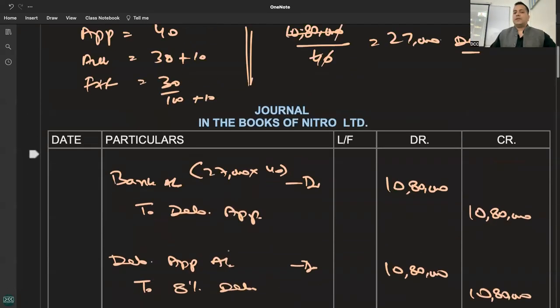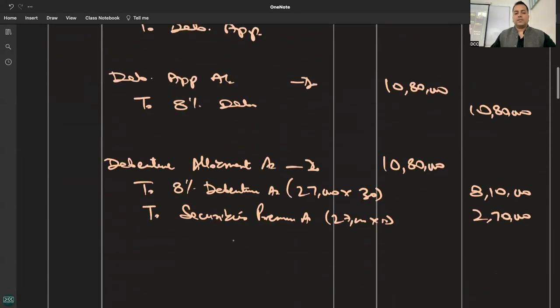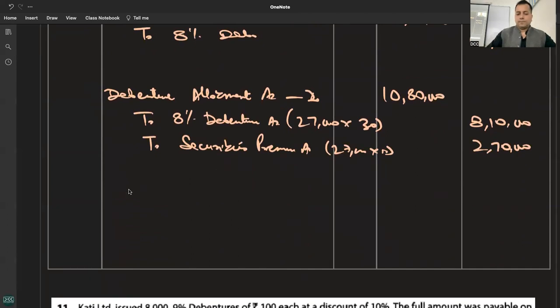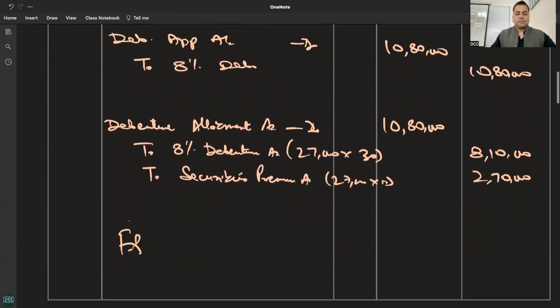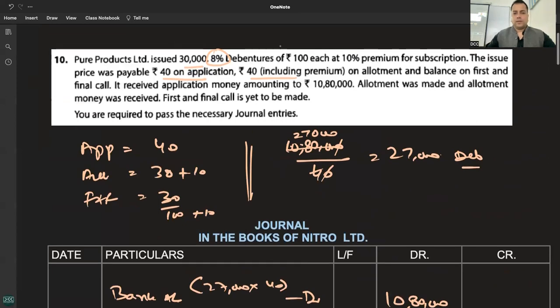The first call entry: 30 rupees. Debenture first and final call to the debentures, bank to debenture first and final call. How much? 30 rupees.